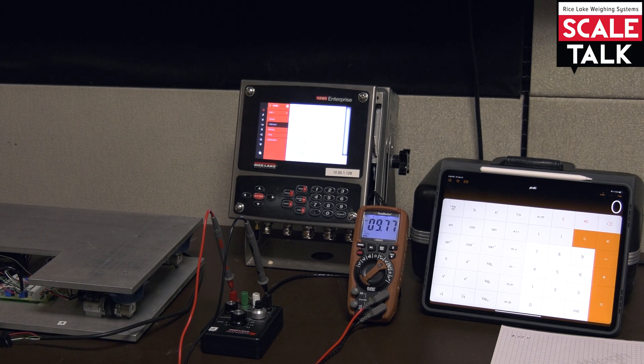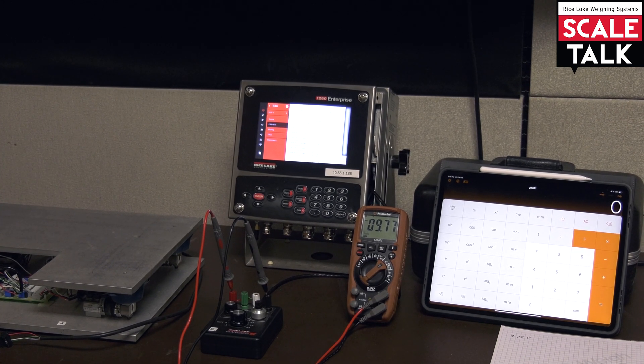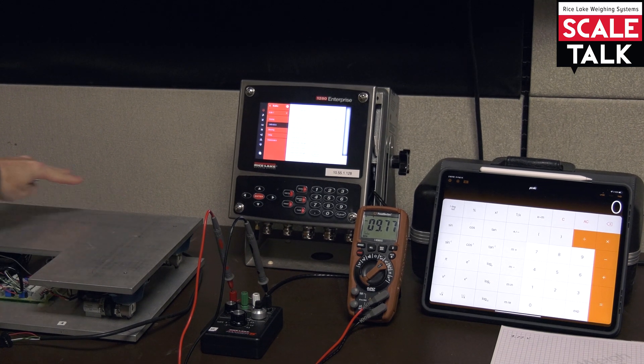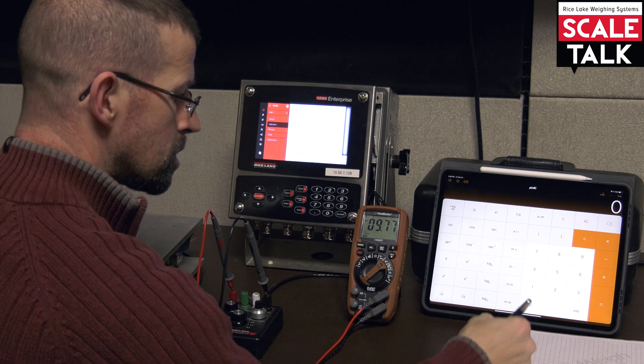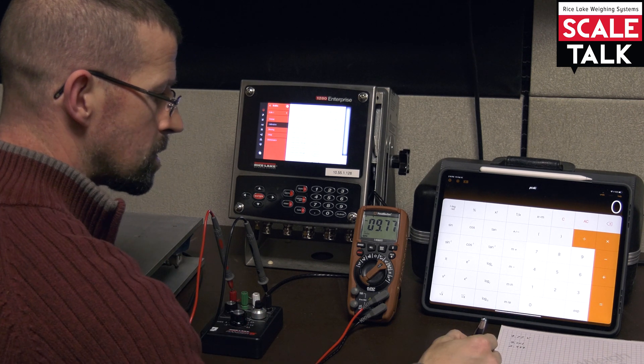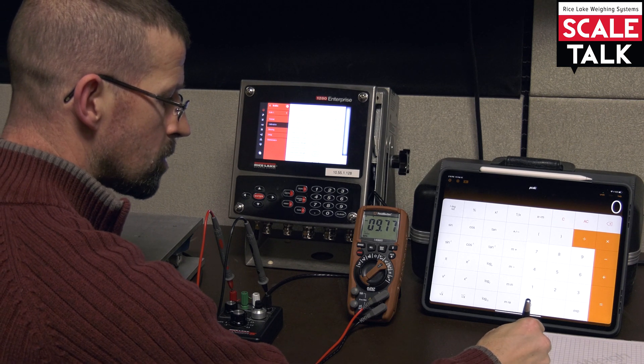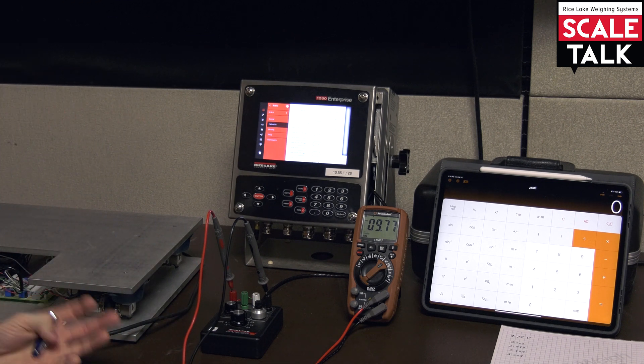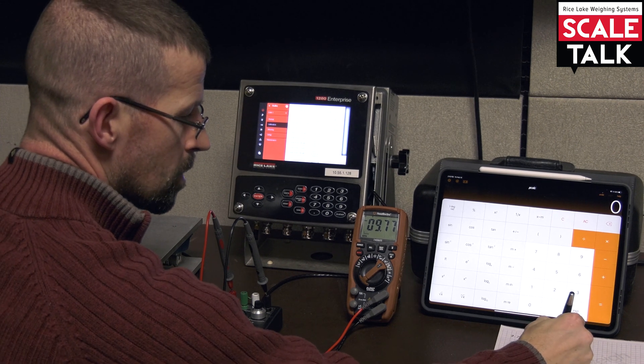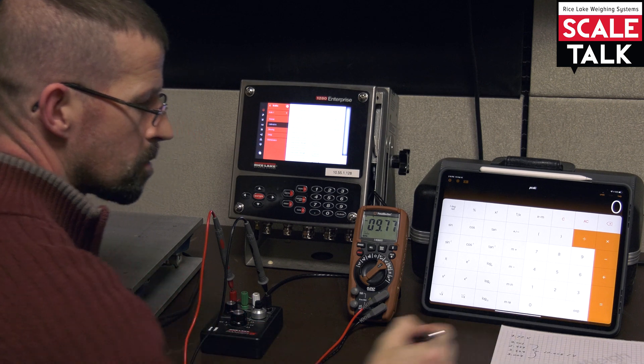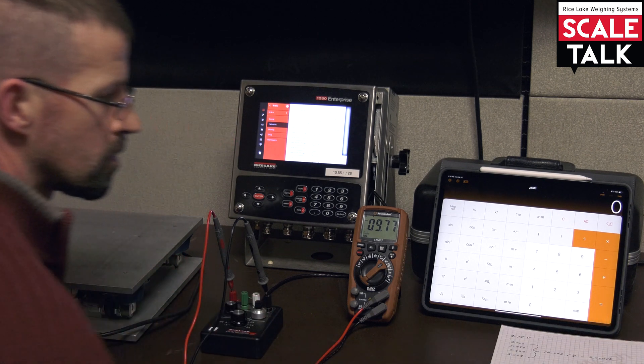Now the next thing we need to know is the millivolt per volt values of the load cells in our system. I've already went ahead and taken a look at these ahead of time and we have four load cells here. Each of my four load cells is 3.001. I have two of them at 2.999 and one of them is at 3.004. And so what I want to do is actually take the average of those, so if I sum these up I get 12.003 divide that by 4, and that will actually give me 3.00075.